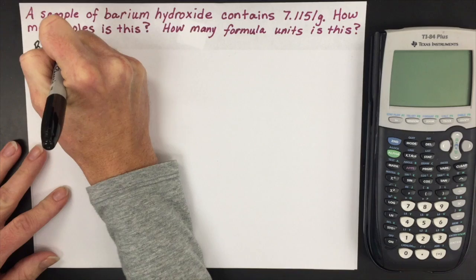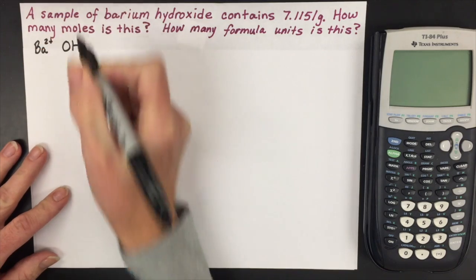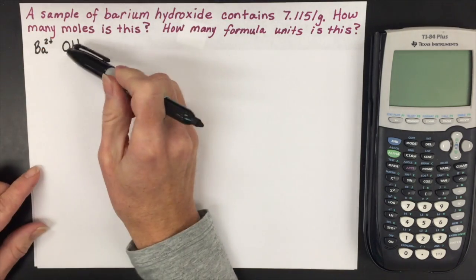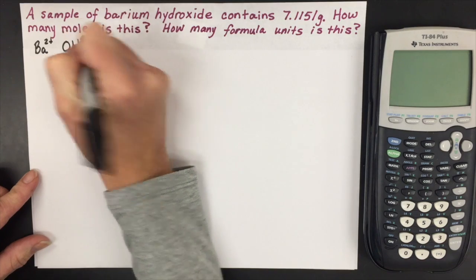The next fact you're going to need to know is that hydroxide is the polyatomic ion, OH, and it has a 1− charge.